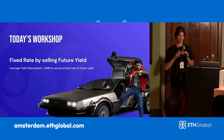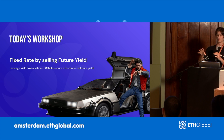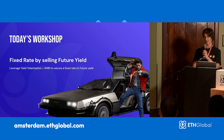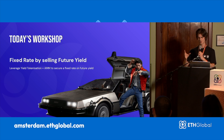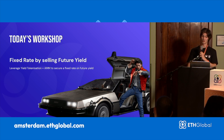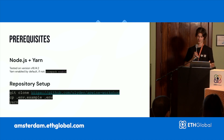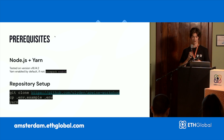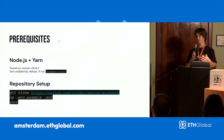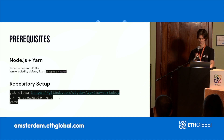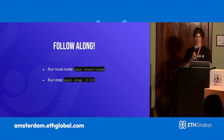Now let's go to today's workshop. Now that we've presented the protocol a little bit, what we're going to build today — and what you can also improve on your own at the hackathon — is going to be a fixed rate by selling future yield. So how do you do this with APWine? Leverage yield tokenization and the APWine AMM to secure a fixed rate on future yield. If you want to follow along, which I really recommend, you're going to need Node.js and Yarn installed on your computer, as well as cloning the repository. The repository is at github.com/yulidev/apwine-workshop.